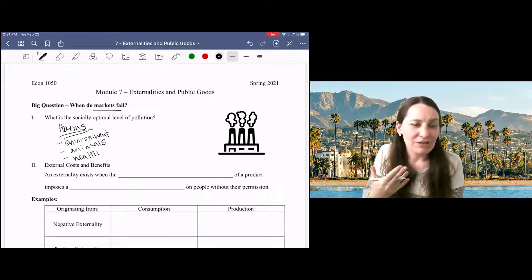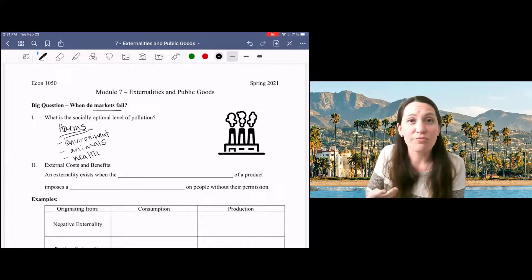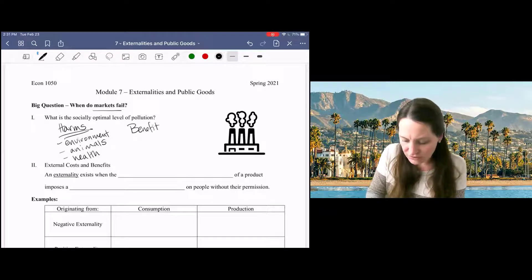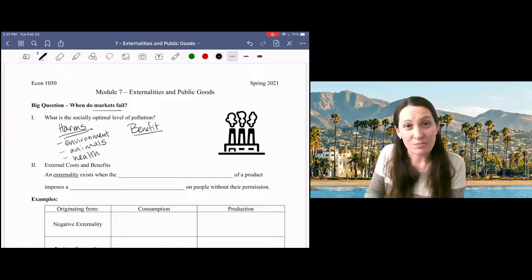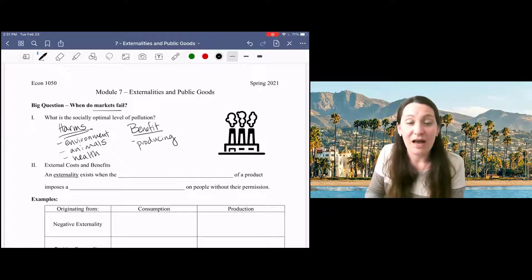But pollution exists for a reason. Pollution exists as a byproduct of production. So although pollution has costs, there is also a benefit to pollution. The benefit of pollution is that it means that we are producing things and therefore we're able to consume them.